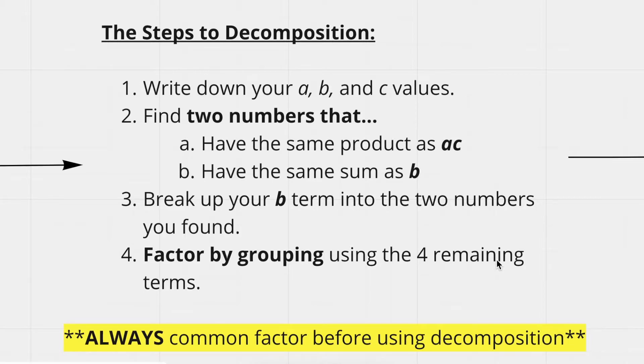Then we want to find two numbers that have the same product as you get when you multiply a and c together, so as ac, and they also should have the same sum as the b term.